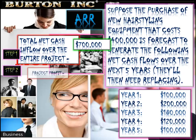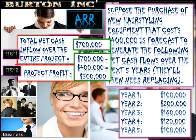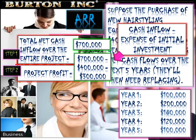The second step is calculating the project profit. The net cash inflows total $700,000, but remember it cost us $400,000 to purchase the equipment in the first place. So projected profit is $700,000 minus $400,000, giving us a projected profit of $300,000.